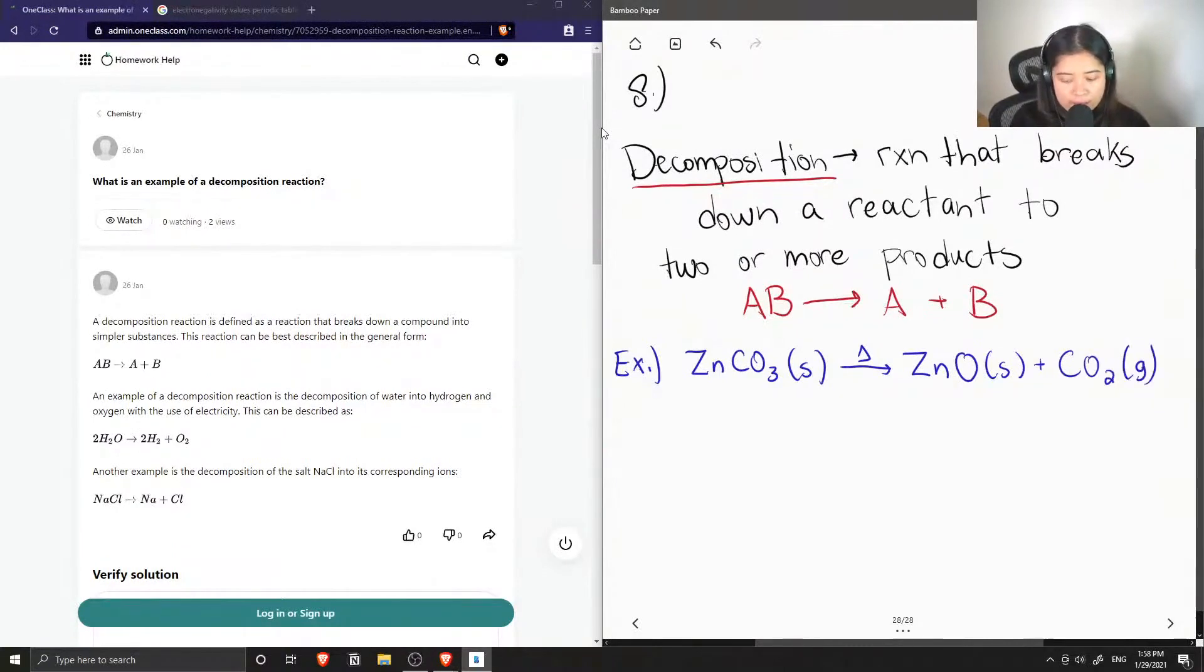And another example would be if we had HBr. When exposed to light, this can break down to hydrogen gas plus bromine gas. So these are examples of decomposition reactions.